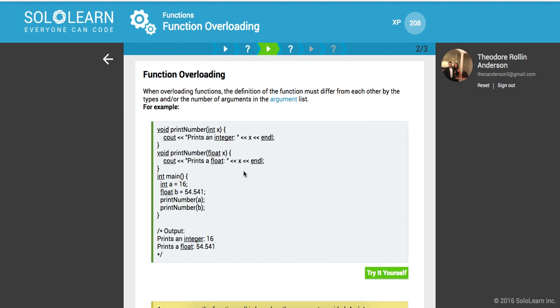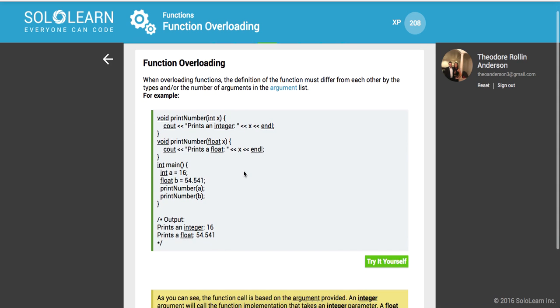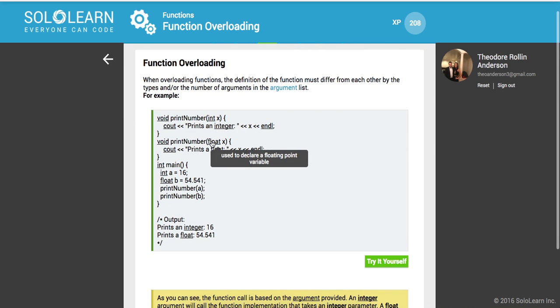Cool. So when overloading functions, the definition of the function must differ from each other by the types and or the arguments or the number of arguments. So here we have an integer and a float.